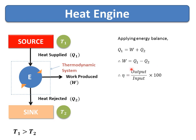The efficiency of the heat engine is given by output divided by input. In this case, output is the work produced and input is the heat supplied, so efficiency equals W divided by Q1, multiplied by 100. The cycle on which the heat engine works goes in the clockwise direction, meaning suction, compression, expansion, and exhaust always go in the clockwise direction for any work-producing device.